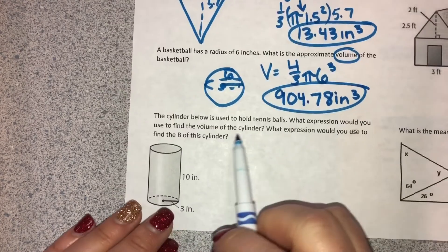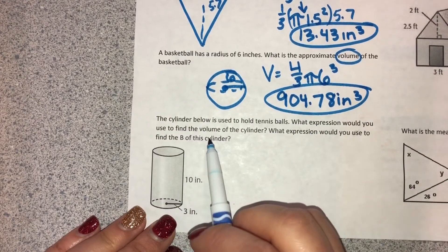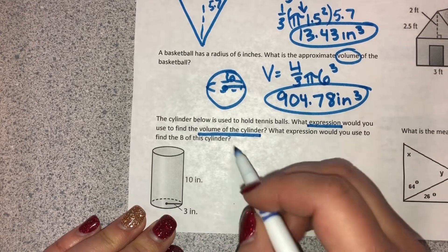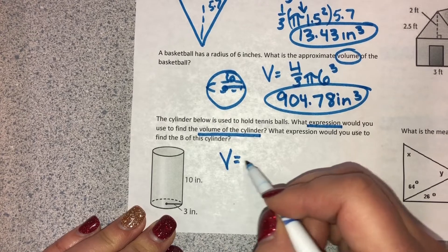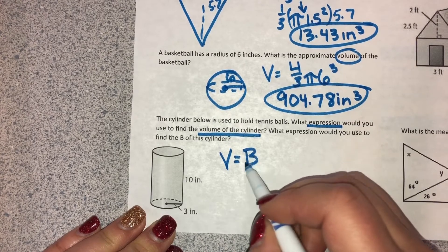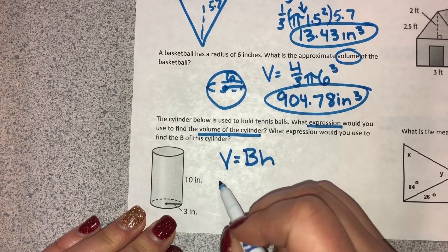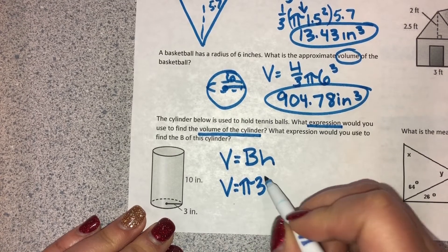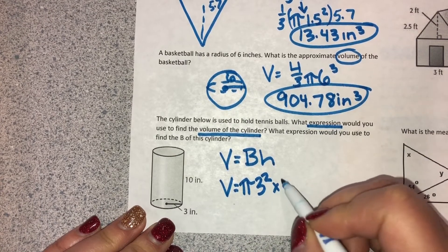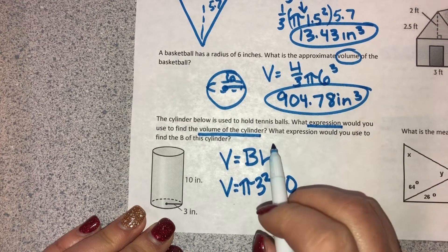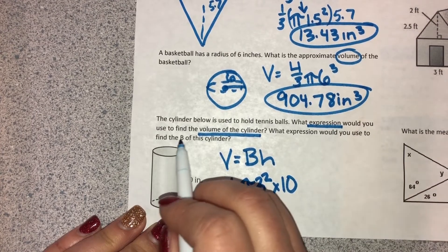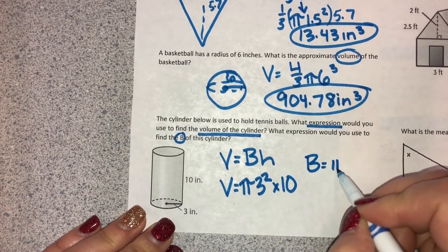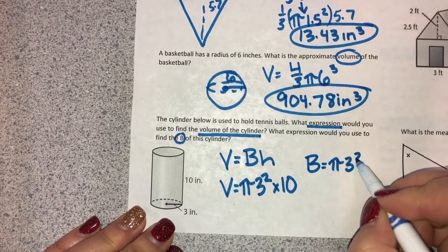The cylinder below is used to hold tennis balls. What expression would you use to find the volume of the cylinder? So it doesn't want the answer, it wants to know the expression. Since the formula is V equals BH, the expression would be V equals pi R squared times the height. Second question is, what expression would you use just to find the B? So if you were just looking for the area of the base, you would do pi radius squared.